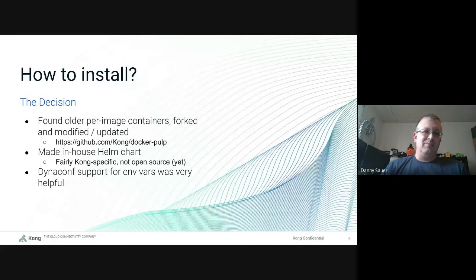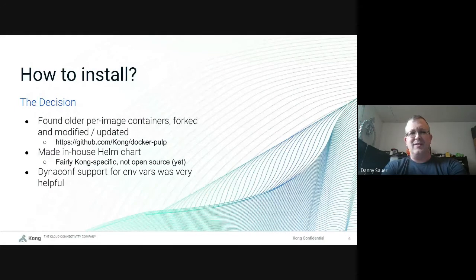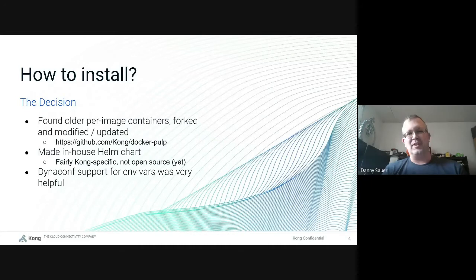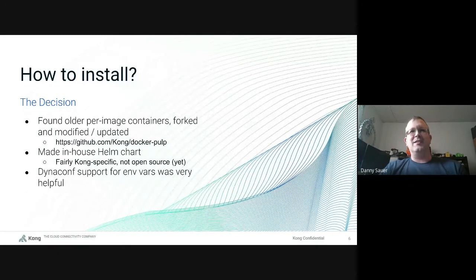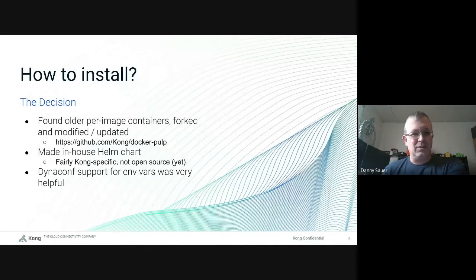We stumbled across someone who had already made per-image containers. There's a base container where you do the basic Pulp install, and then separate containers for the API server, content server, and management server that just launch the different components as the entry point. That seemed like a good fit, so we forked that repo, brought it up to date, applied a number of modifications. That fork is open source, so anyone can grab it, use it, or change it.